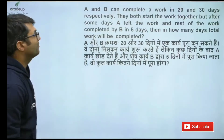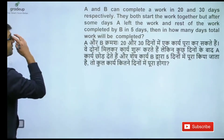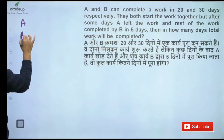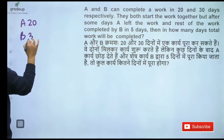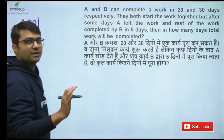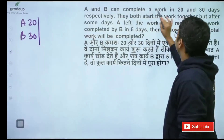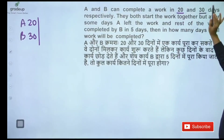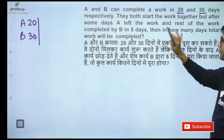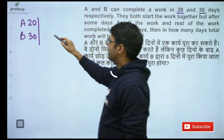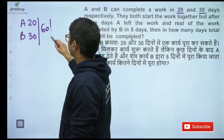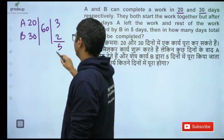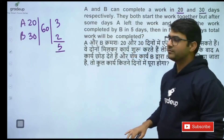15 is the right answer. So what is given in this question — A can do the work in 20 days, B can do the same work in 30 days. I can make the structure first: this is 3, 2, total 5.